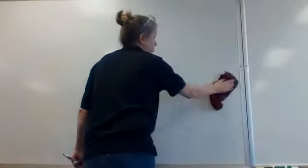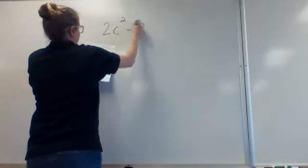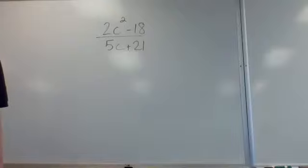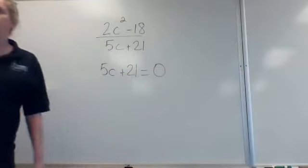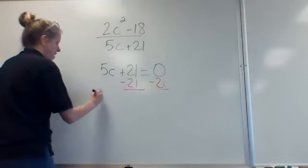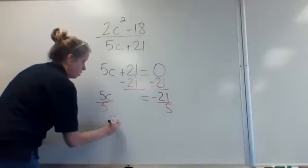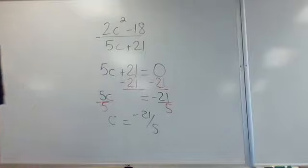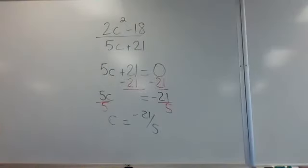When it asks you to find what makes it not defined, your answer looks like X equals something — those are the x's that make the denominator zero. When it asks for the domain, the answer is X is a real number and X cannot equal what makes the denominator zero. Number one: find all numbers for which the expression 2c squared minus 18 over 5c plus 21 is not defined.